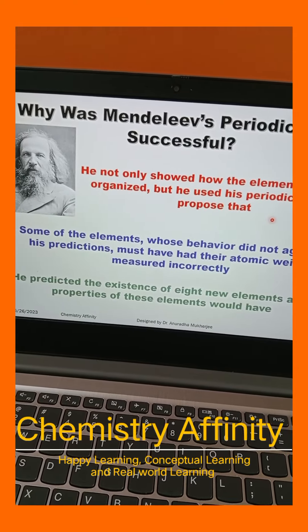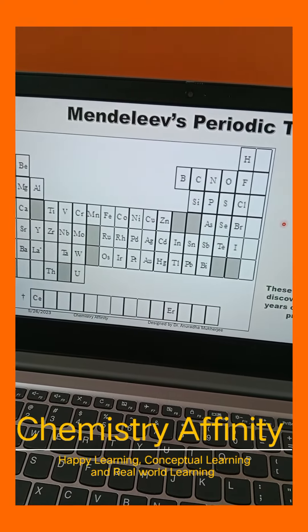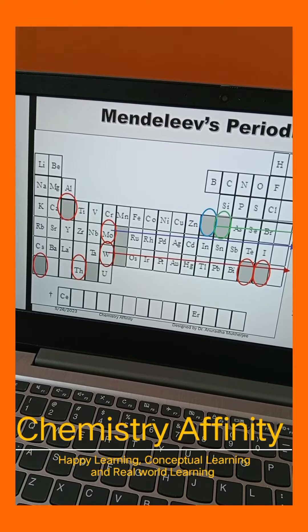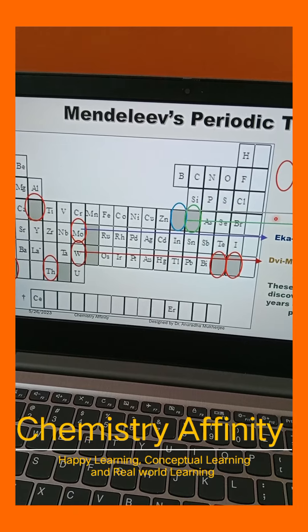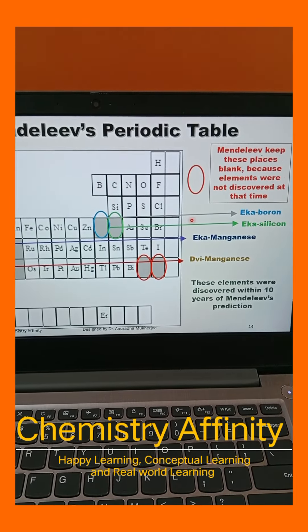Mendeleev also predicted the existence of eight new elements and their properties. In his Periodic Table, he kept these places blank because he knew these elements were going to be discovered.